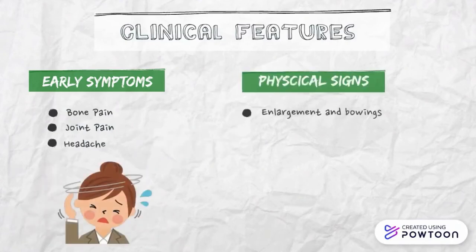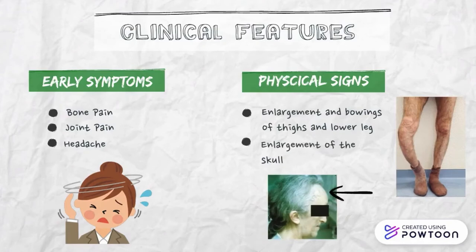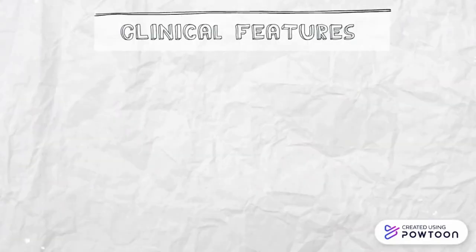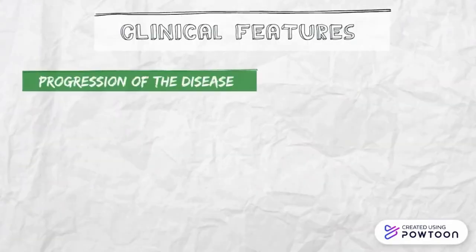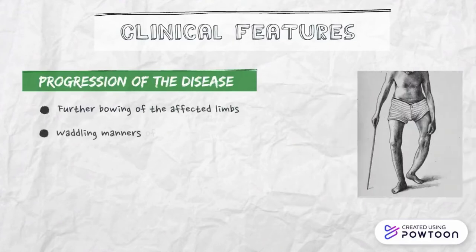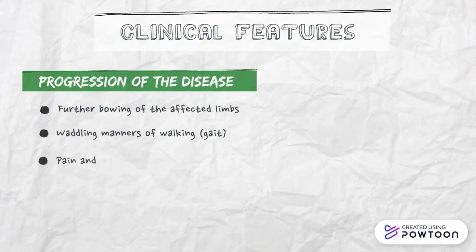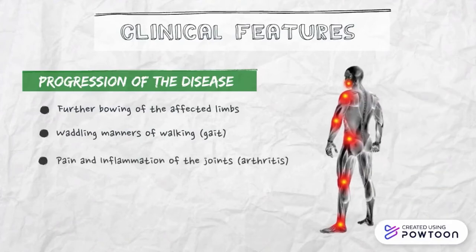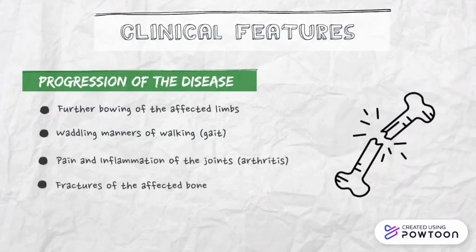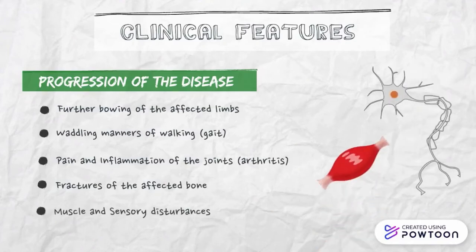Physical signs include enlargement of the femur, lower leg tibias, and enlargement of the skull in the area of the forehead. As the disease progresses, there is further bowing of the affected limbs, a waddling manner of walking, pain and inflammation of the joints or arthritis, fractures of the affected bone, and muscle and sensory disturbances.